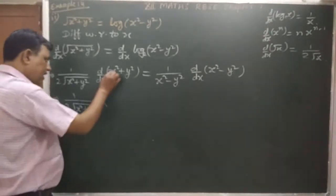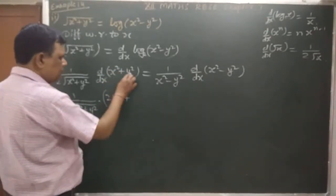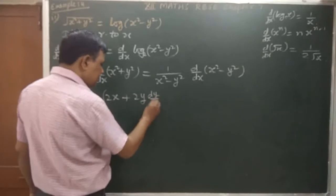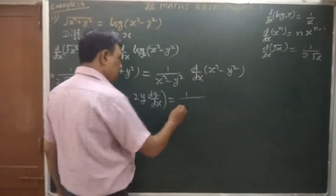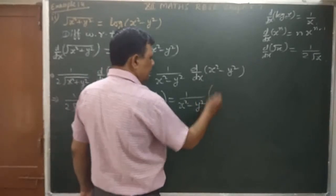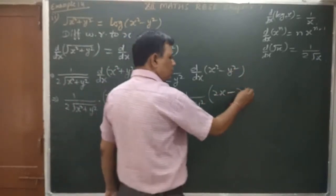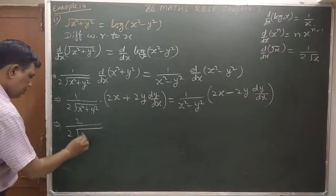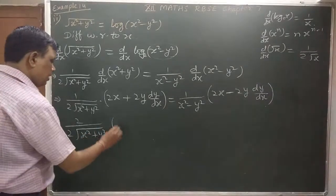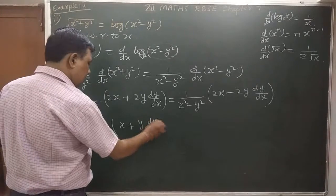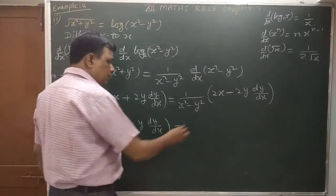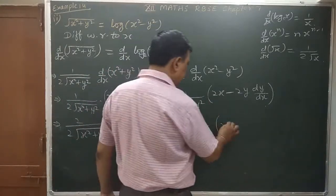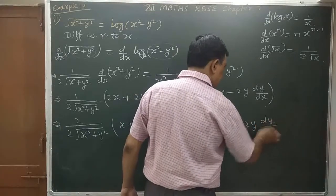So we have 1 upon 2 root(x² + y²) times (x + y dy/dx) on the left, and on the right 1 upon (x² - y²) times (2x - 2y dy/dx). The 2s cancel upon cross multiplication.